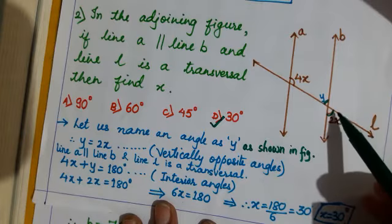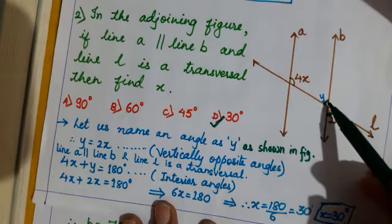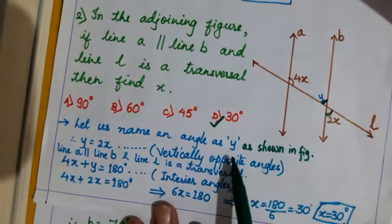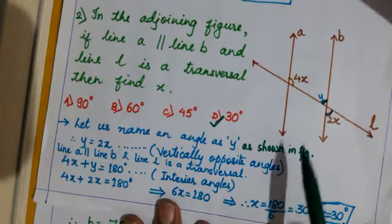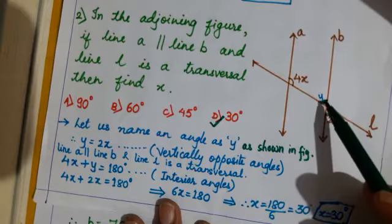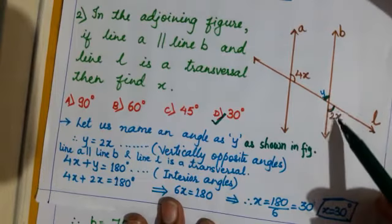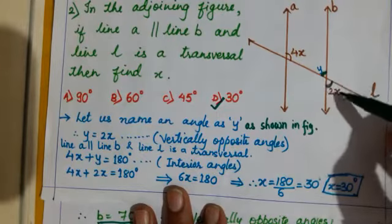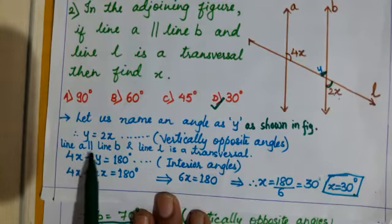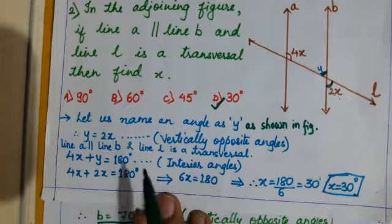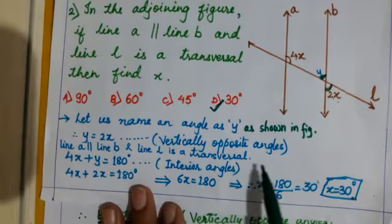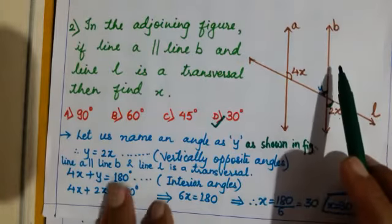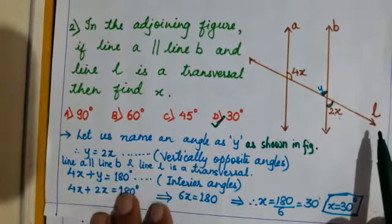Let us name the 2x angle as y, as shown in the figure. Angle y and angle 2x are vertically opposite angles, so y equals 2x. Therefore y equals 2x — the reason is vertically opposite angles. Lines a and b are parallel and line l is a transversal.